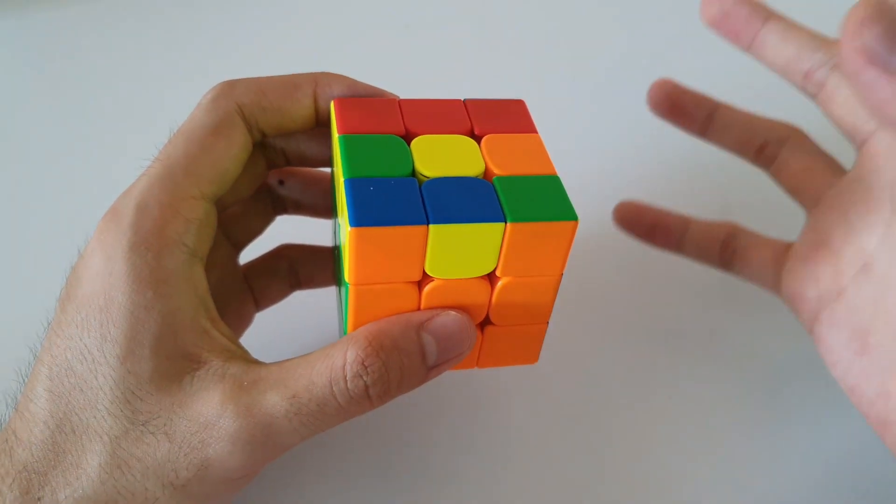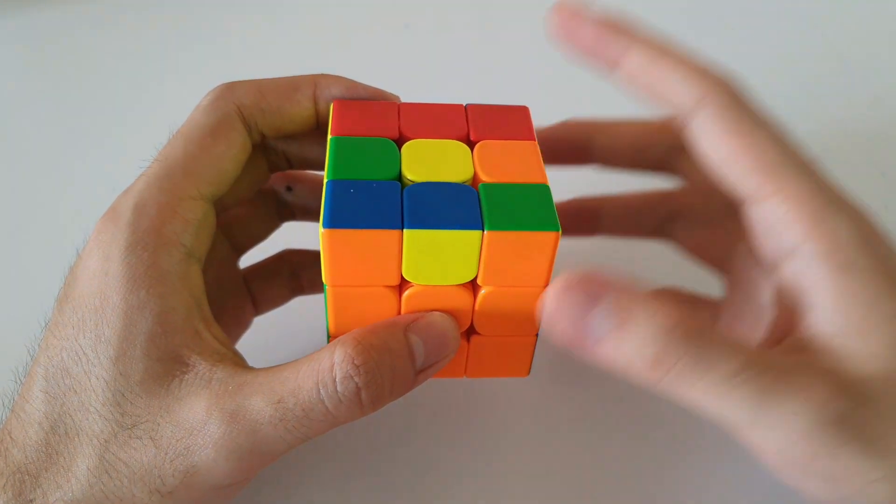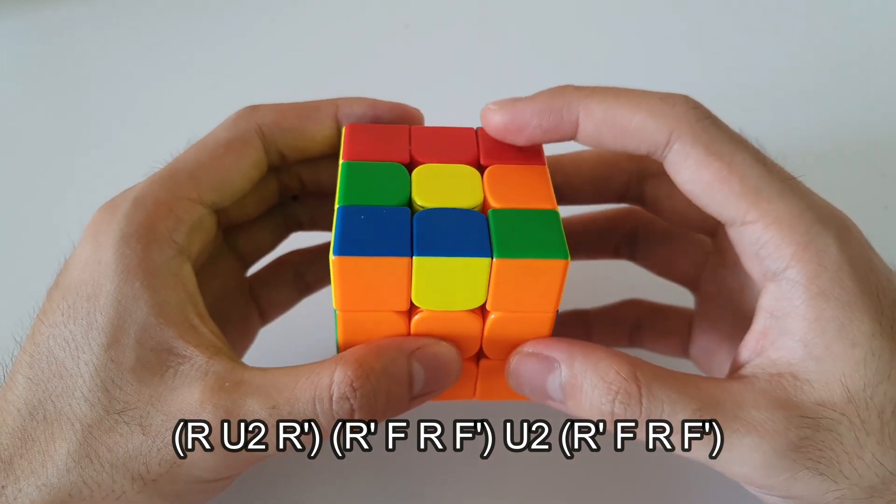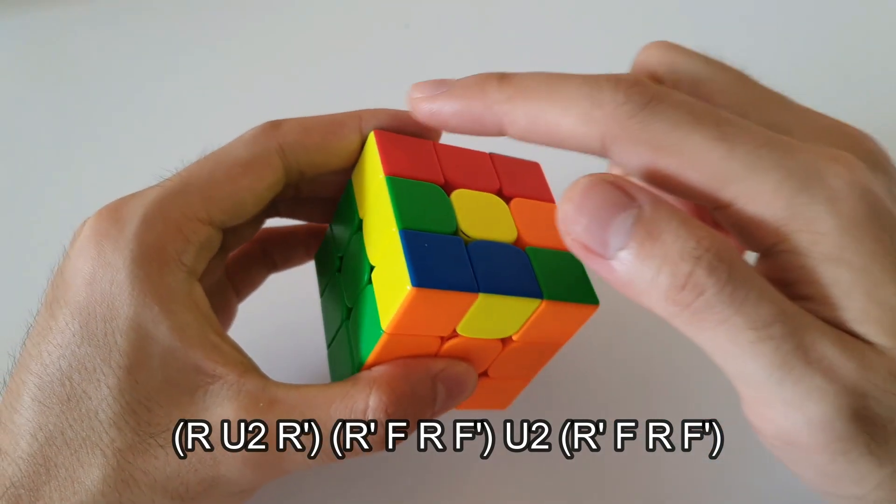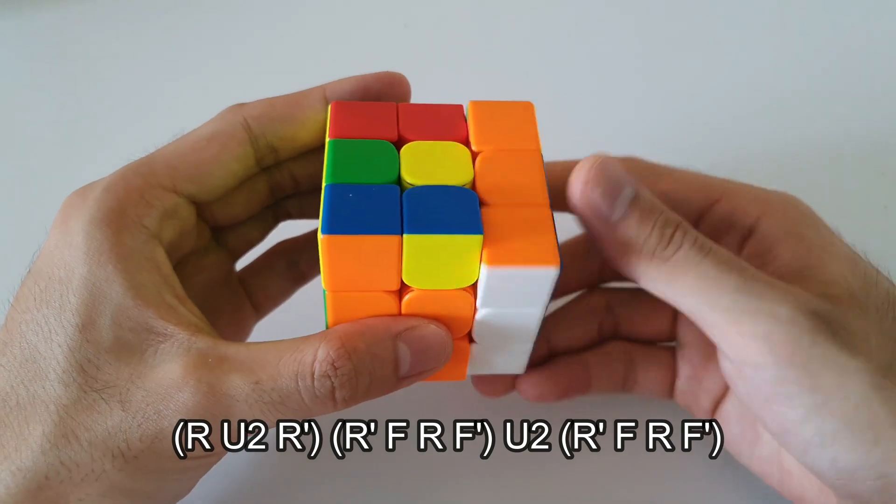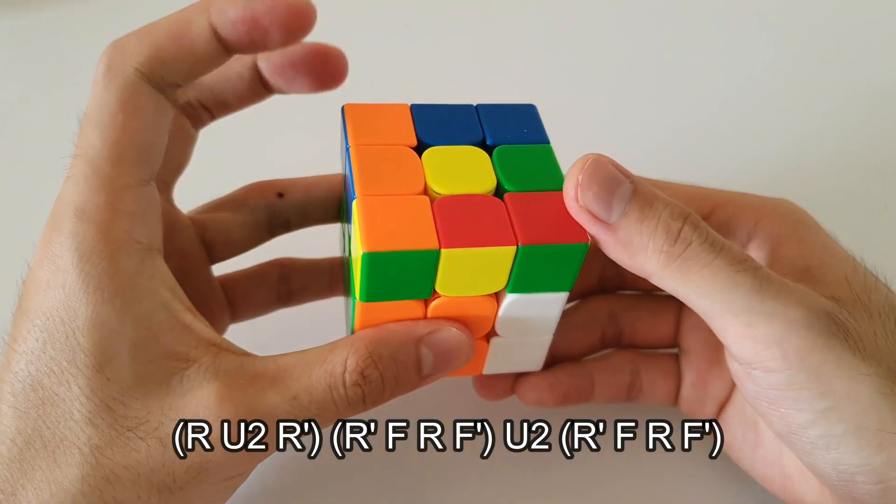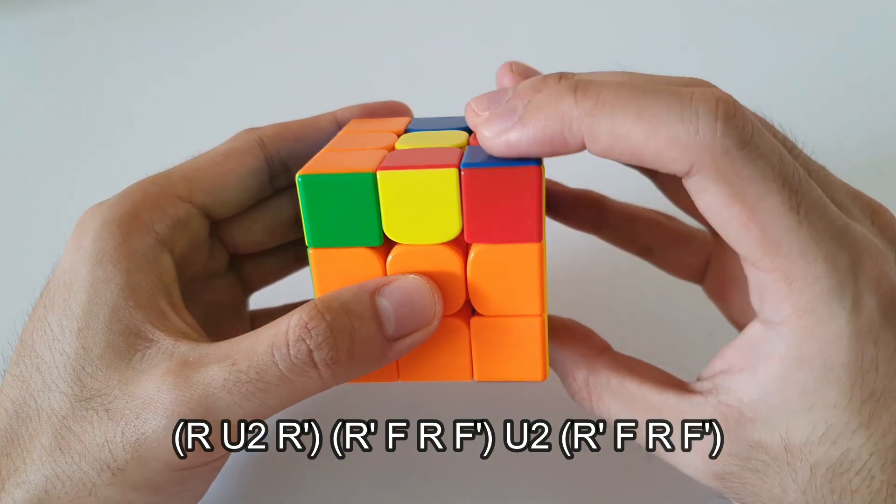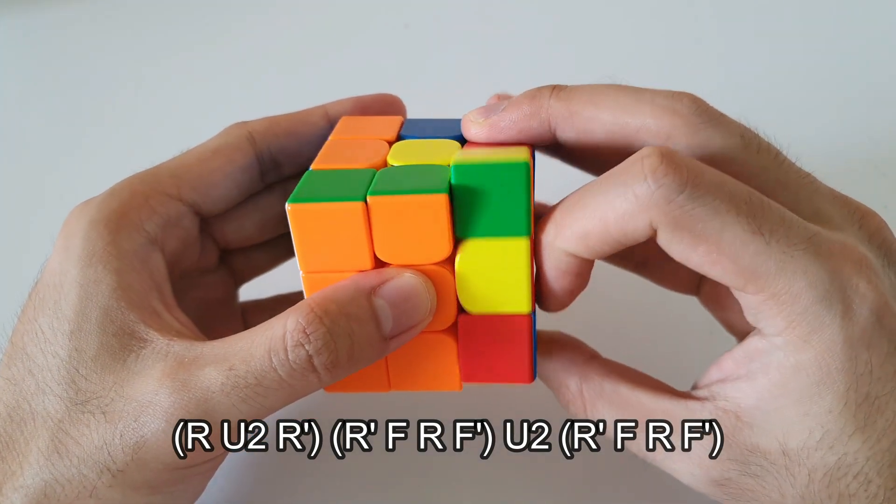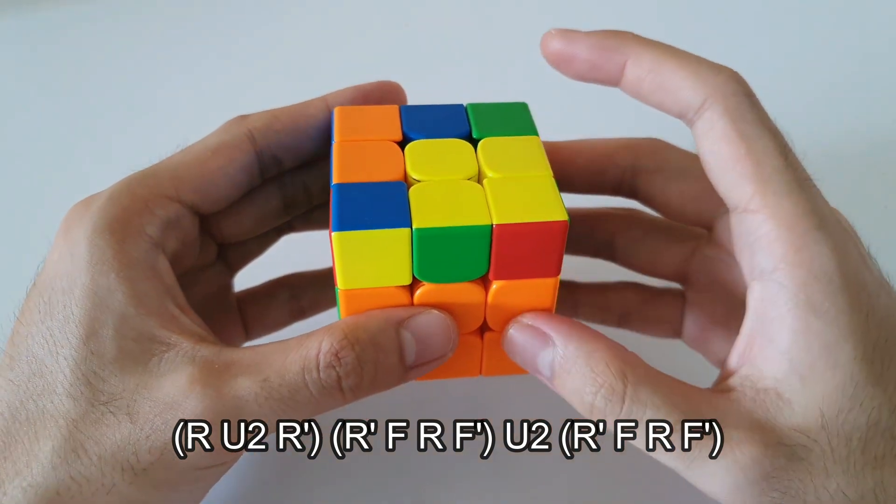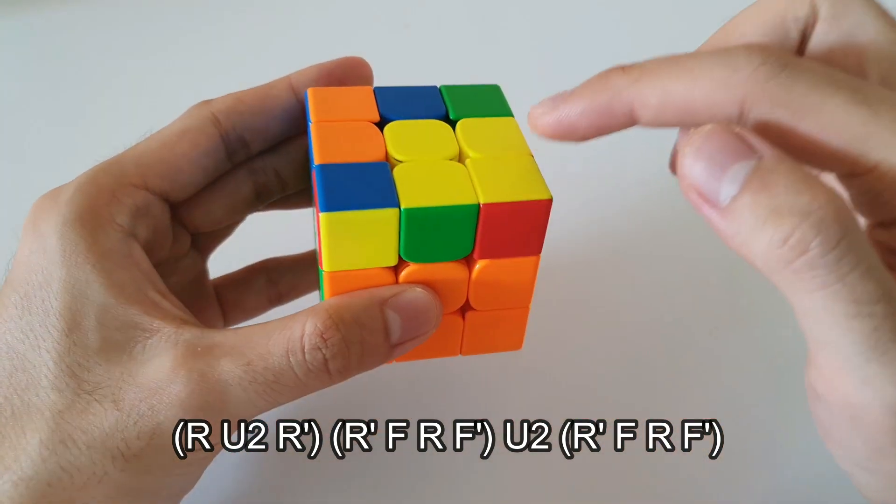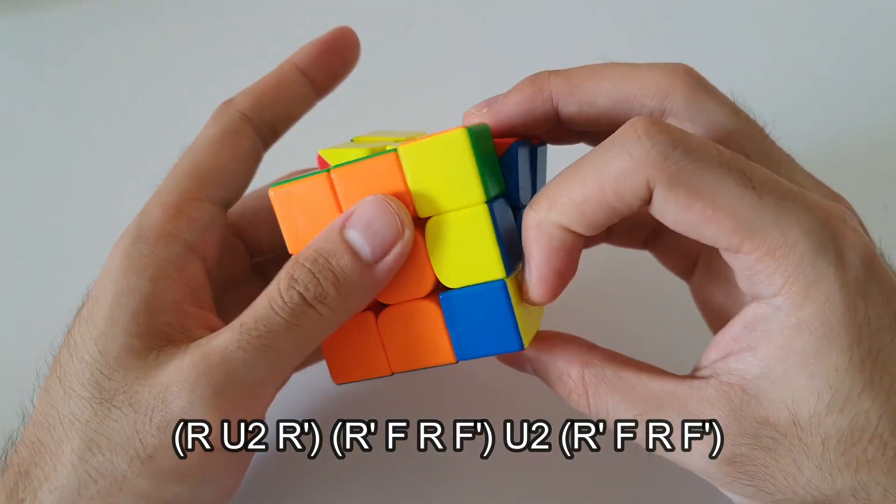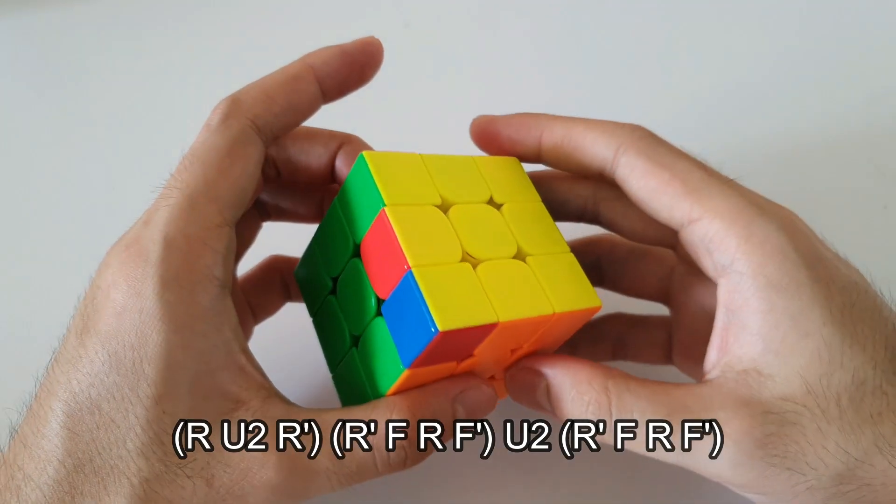The algorithm is fairly straightforward, especially if you break it down into individual parts. So it starts off with an R U2, so you can think of it as taking this F2L pair out, putting it across from where it lives, like this. Following that R' into a sledgehammer, so you can think of it as an R2 into a sledgehammer if you like. After that, move the F2L pair all the way back around to the front and insert it with another sledgehammer. And that solves that OLL case.